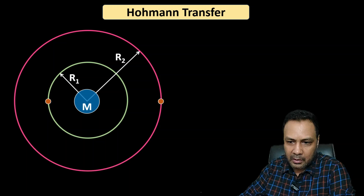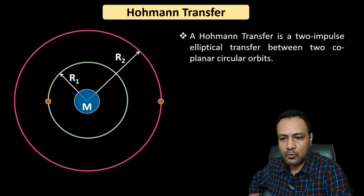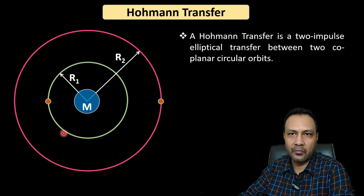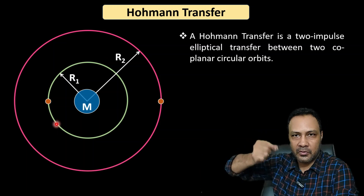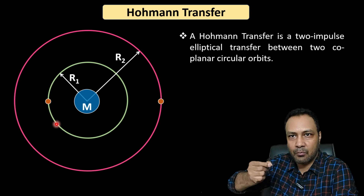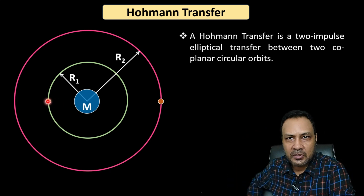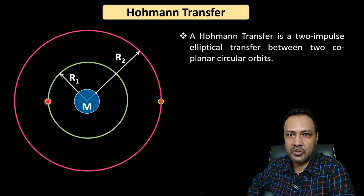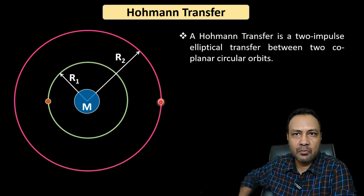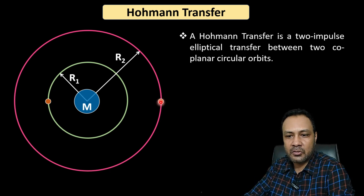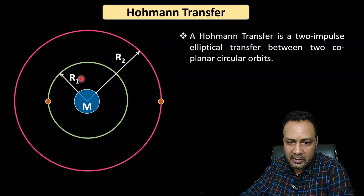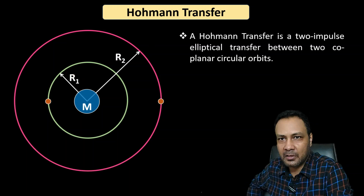A Hohmann transfer is a two-impulse elliptical transfer between two coplanar circular orbits. Here is a planet of mass M and a satellite revolving in a circular orbit of radius R1. A rocket fires in the opposite direction of motion, giving the satellite a velocity impulse — sufficient to embark upon an elliptical orbit, but not enough to escape. When it reaches the outer orbit, another velocity impulse is given so it gets just the right velocity for that circular orbit.